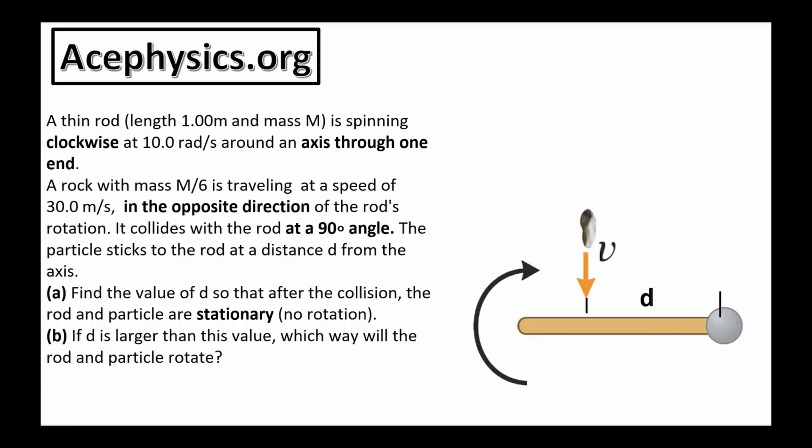Question 2: A thin rod of length 1 meter and mass m is spinning clockwise at 10 radians per second around an axis through one end. A rock with mass m over 6 is traveling at a speed of 30 meters per second in the opposite direction of the rod's rotation. It collides with the rod at a 90-degree angle. The particle sticks to the rod at a location d from the rotation axis. Find the value of d so that after the collision the rod and particle are stationary. If d is larger than this value, which way will the rod rotate?